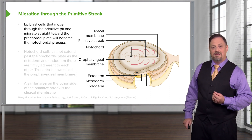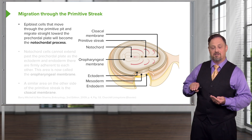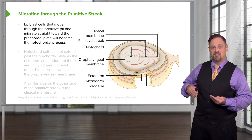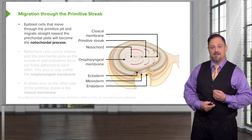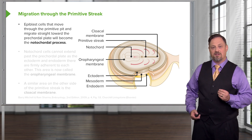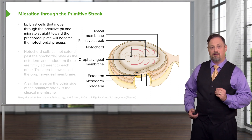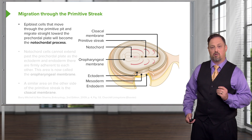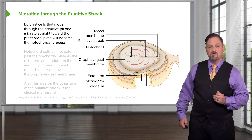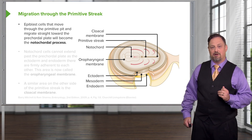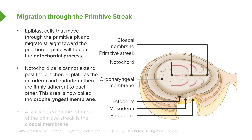A specialized set of cells will move through the primitive streak and primitive node and go straight toward the precordal plate. This specialized group of cells migrating directly anteriorly are called the notochordal process, and they're moving close to the precordal plate but not quite all the way to it. As development continues, the notochordal process moves closer and closer to the precordal plate, which will change names to become the oropharyngeal membrane.